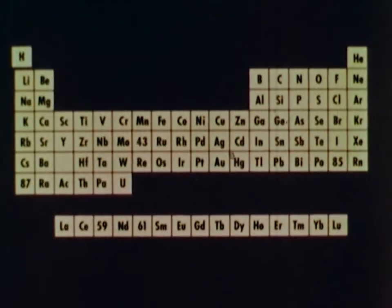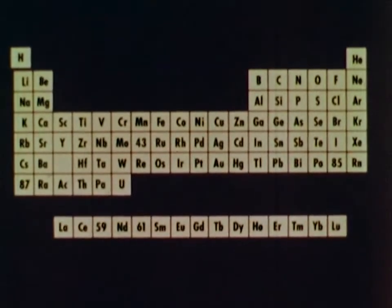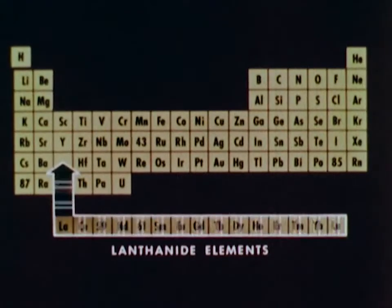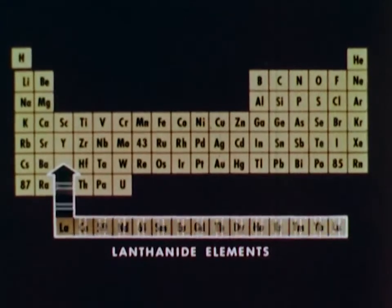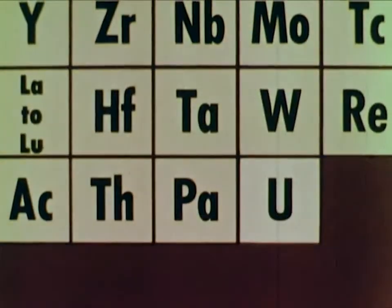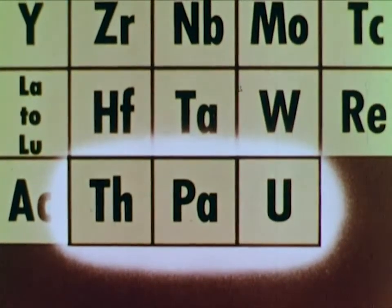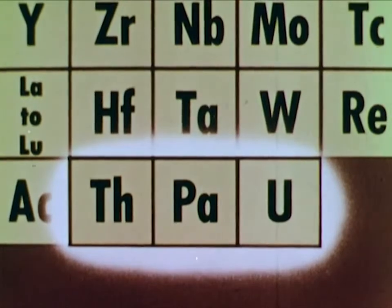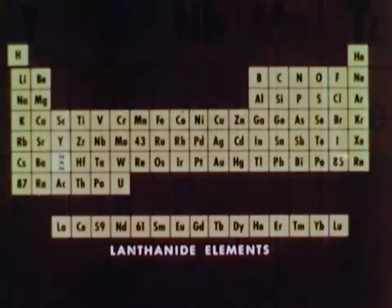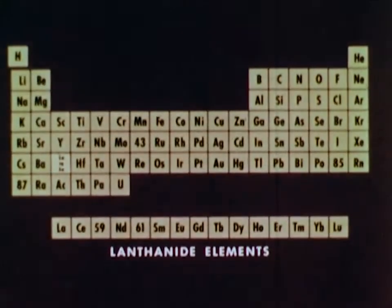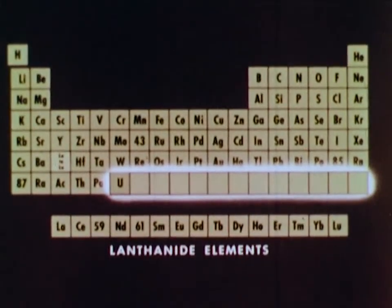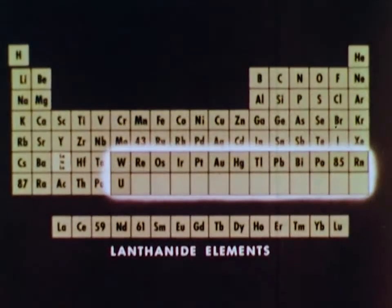This is a periodic table as it looked before 1940. The rare earth elements, or lanthanide elements, were fitted between barium and hafnium as they are today. But thorium, protactinium, and uranium were believed to be related to hafnium, tantalum, and tungsten. The transuranium elements, or elements after uranium, were expected to fill out this role and to have properties that resembled these elements.